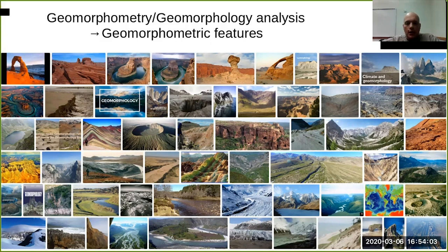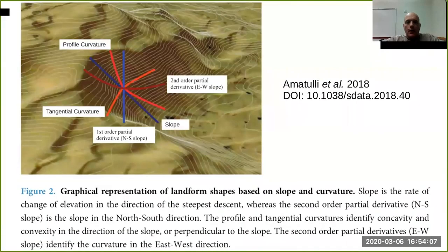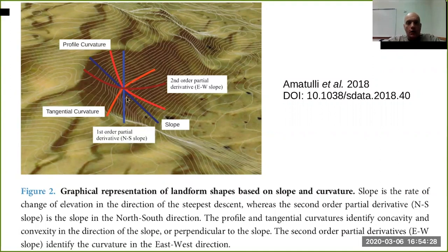Let's see in practice what this means and how we can derive this information from the digital elevation model. If you think in a three-dimensional way, a simple slope profile can be characterized by different lines, and according to how these lines move you can identify the simple slope — the changing of elevation in the deepest direction.